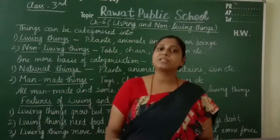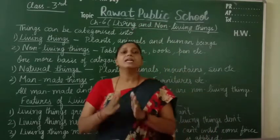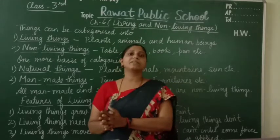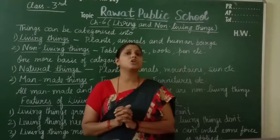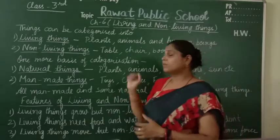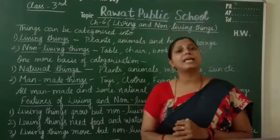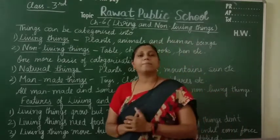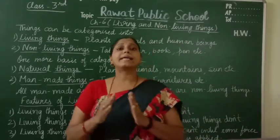So I hope the difference is clear between living and non-living things. Living things show the characteristics which all living things show. But non-living things do not show any such characteristics. There is one more basis on which living things can be categorized.